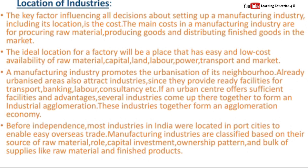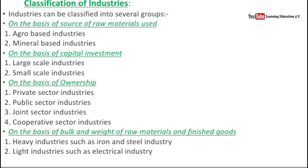Manufacturing industries are classified based on their source of raw material, capital investment, ownership pattern, and bulk and weight — that is, the raw material and finished products that are sent to market. Industries are classified into several groups.